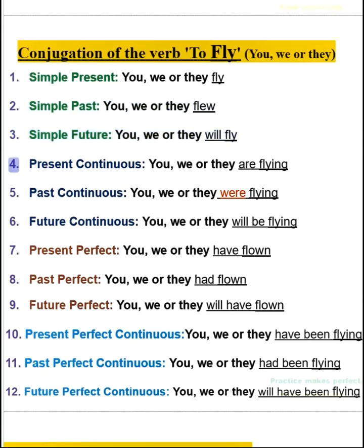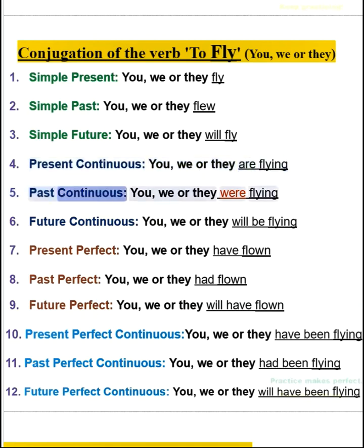4. Present continuous — you, we, or they are flying. 5. Past continuous — you, we, or they were flying. 6. Future continuous — you, we, or they will be flying.